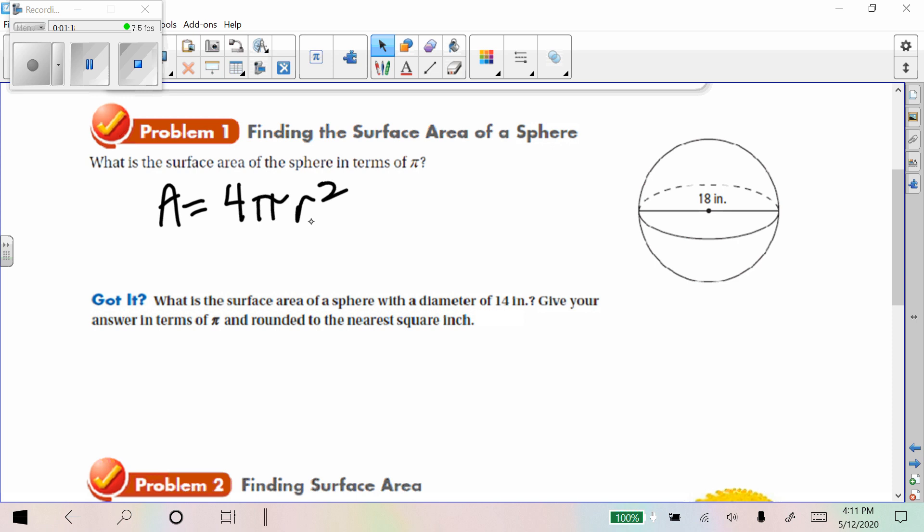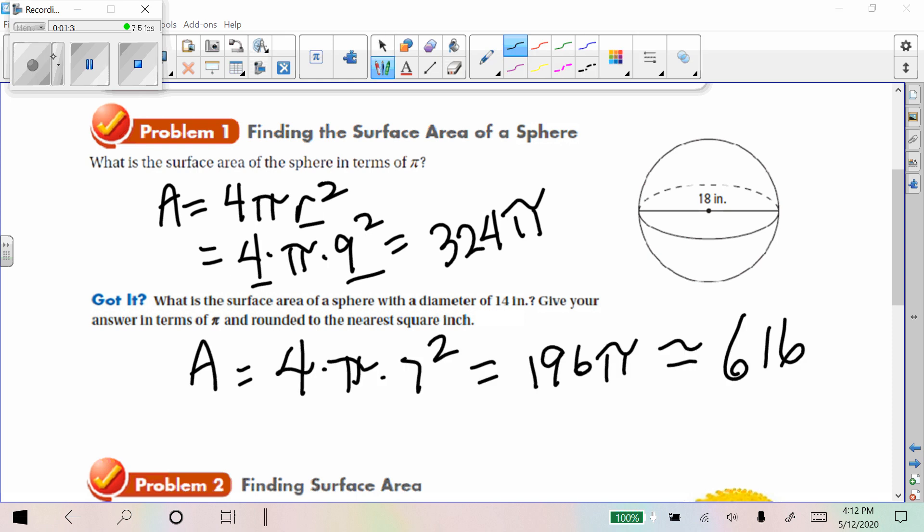Area equals 4 pi r squared. We're going to leave this one in terms of pi. So we're going to use the radius there, which is 9. 4 times pi times 9 squared. This is 81 times 4 is 324 pi. All right, why don't you try one like that, see if it works out for you. All right, your work should look something like that.